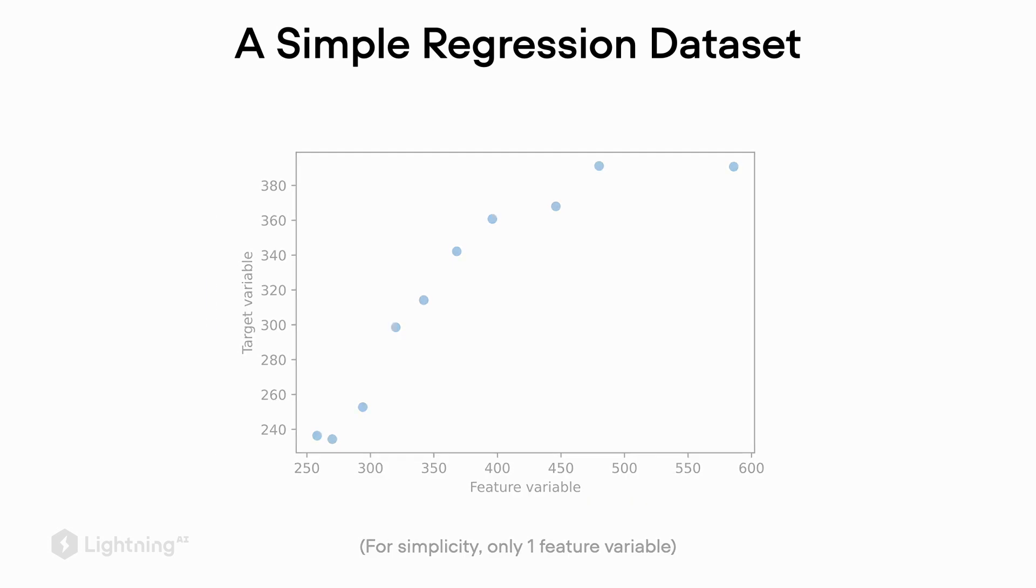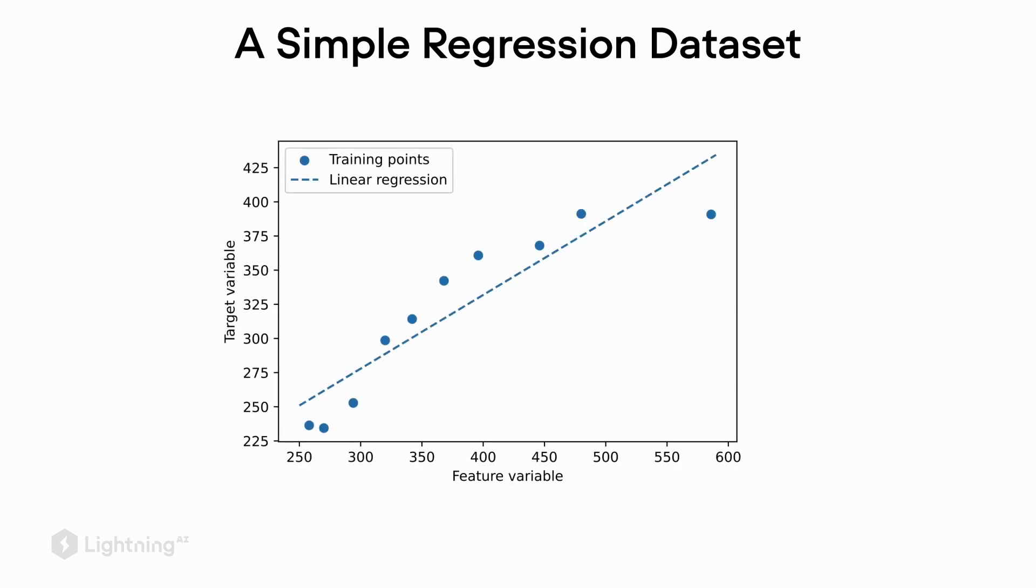Now here's an example of a linear regression line. So suppose we use a linear regression model and apply it to that dataset. The straight line here is the linear regression model, so it takes in the feature values and predicts the target values.